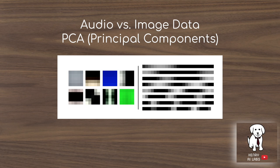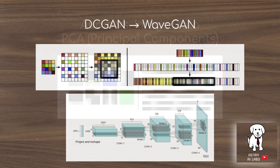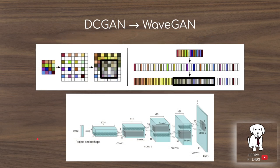This is further illustrated by principal components analysis when you analyze audio versus image data. The principal components of image data usually show some kind of edge features. The audio PCA, however, shows clear cyclical patterns — you can see cycles in each of the principal components of the audio data. The DCGAN was an enormous step forward for applying generative adversarial networks to image data.